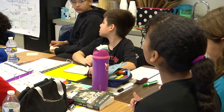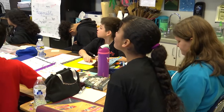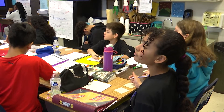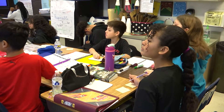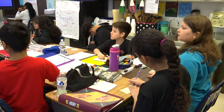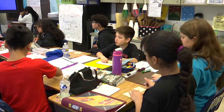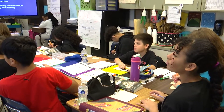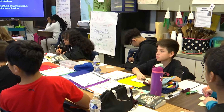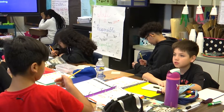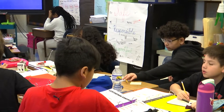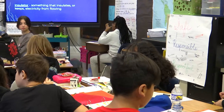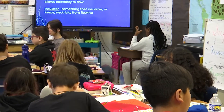What's the root word of conductor? Conduct — right, it means to lead or make happen. And what's the root word of insulator? Insulate. If you insulate something, you keep it protected, you keep it confined. When we add OR to the end, it means something that does that — so an insulator is something that insulates, and a conductor is something that conducts or makes happen.